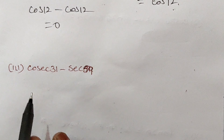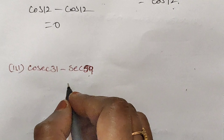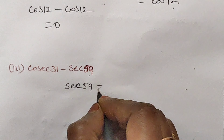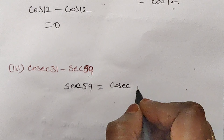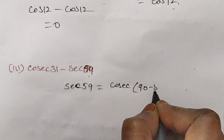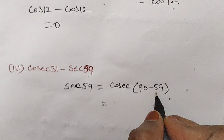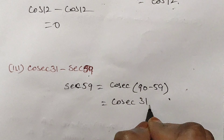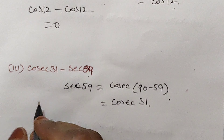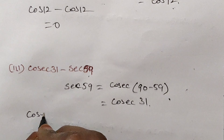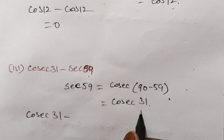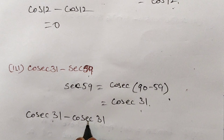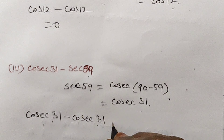Next question: cos 31 minus sec 59. Sec 59 can be written as cosec(90 minus 59). 90 minus 59 is 31, so sec 59 is equal to cosec 31. Therefore, cos 31 minus sec 59 becomes cosec 31 minus cosec 31, which equals 0.